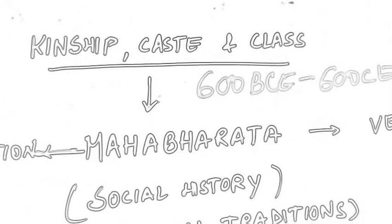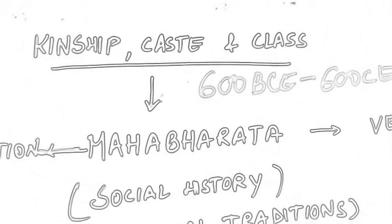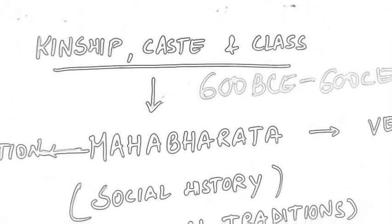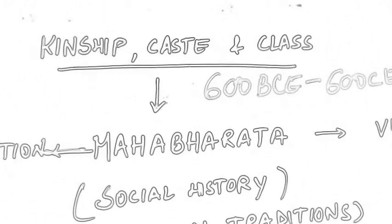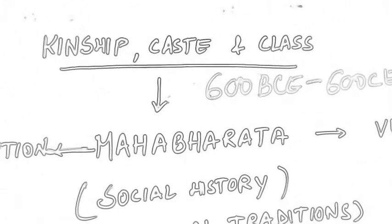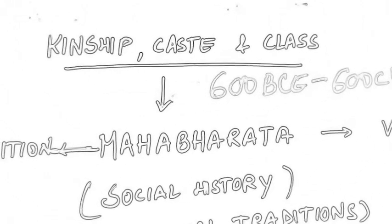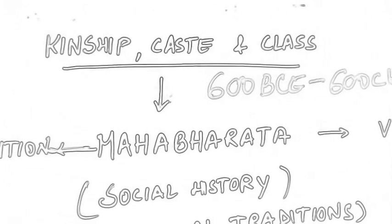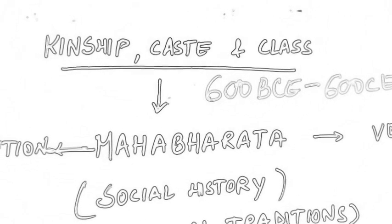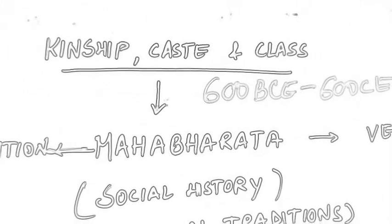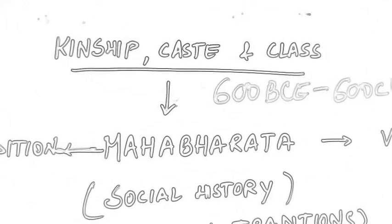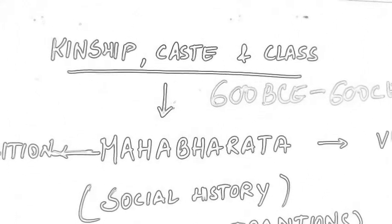If you are talking about the varna system, you will call it the class system, where there are four varnas: Brahmin, Kshatriya, Vaishya and Shudra. But in this period, caste has started to develop — meaning among the Vaishya community and among the Shudra community. Like we discussed in the second chapter, there are many guilds and people have been referred to as goldsmith or blacksmith. So people have divided themselves by occupation and now they are called by their caste. People now identify themselves by caste. But for Brahmin or Shudra, there are not many caste forms — they are still operating in the same varna system.